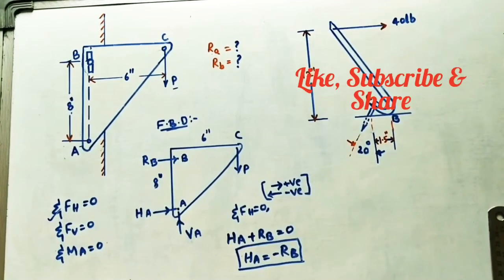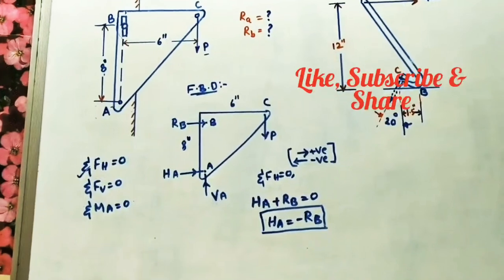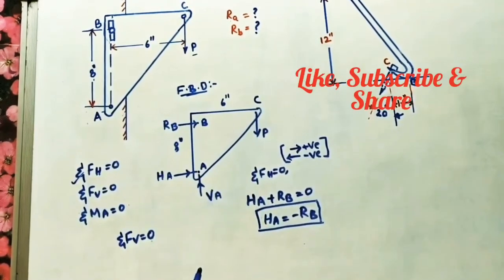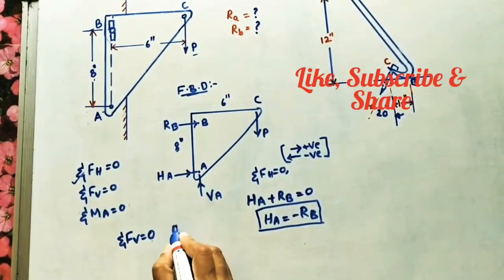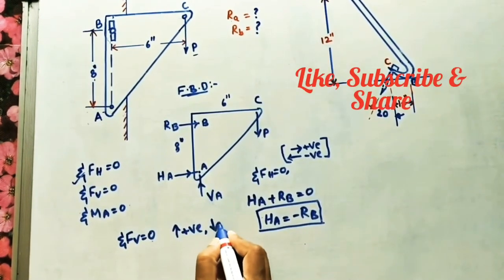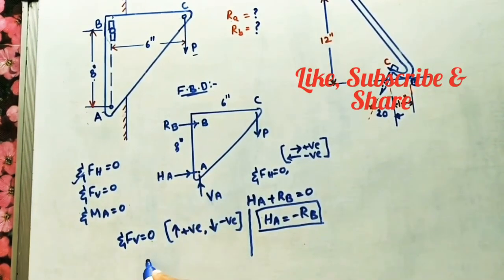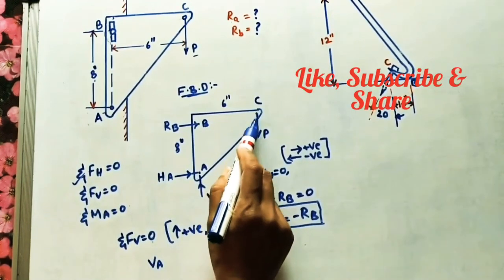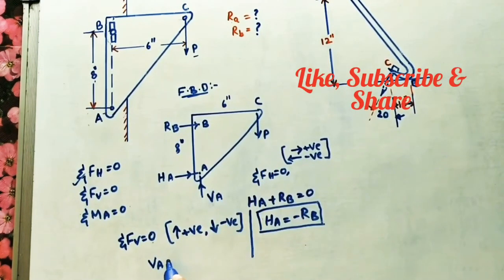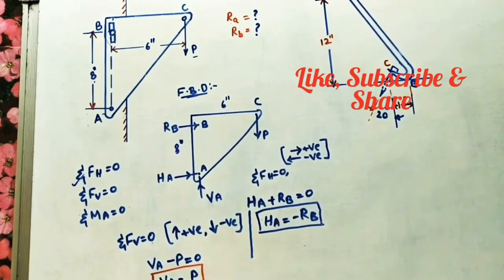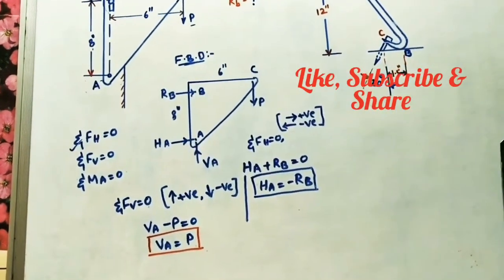Applying the second condition, sigma FV equals zero: taking upward as positive and downward as negative. The vertical forces are VA (upward, positive) and P at C (downward, negative). So VA minus P equals zero, giving VA equals P. The vertical component at A equals P.